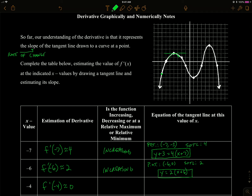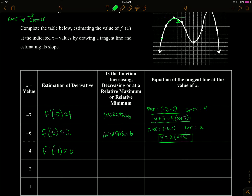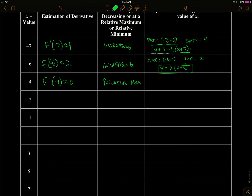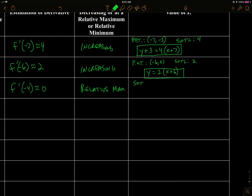At x equals negative four, if I draw the tangent line there, it looks like it has a slope of zero. Is the function increasing or decreasing as I go from left to right? It's doing neither — it was increasing before that point and decreasing after. When it changes from increasing to decreasing, we call that a relative maximum.